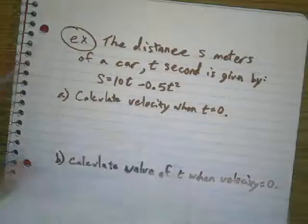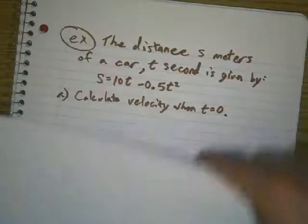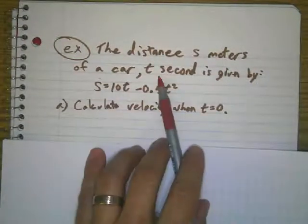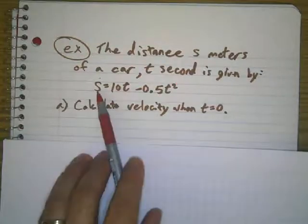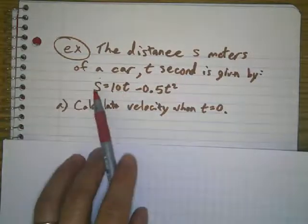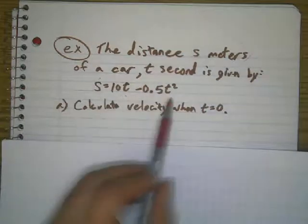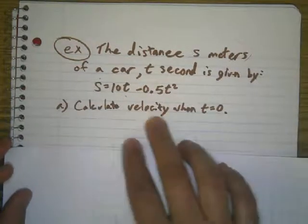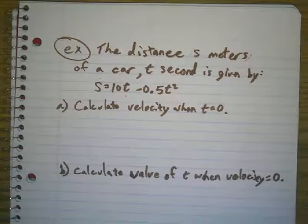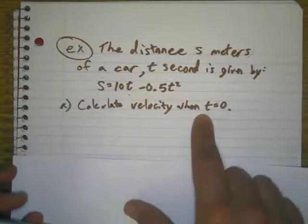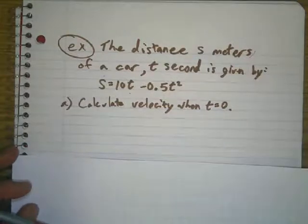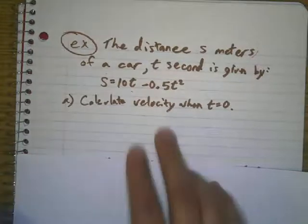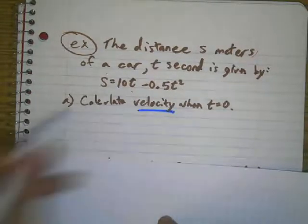So you've got this function. The distance s meters of a car over t seconds is given by this function. s represents meters, t represents time. So calculate when the velocity is going to be zero. Well, we need to make the derivative equal to zero.